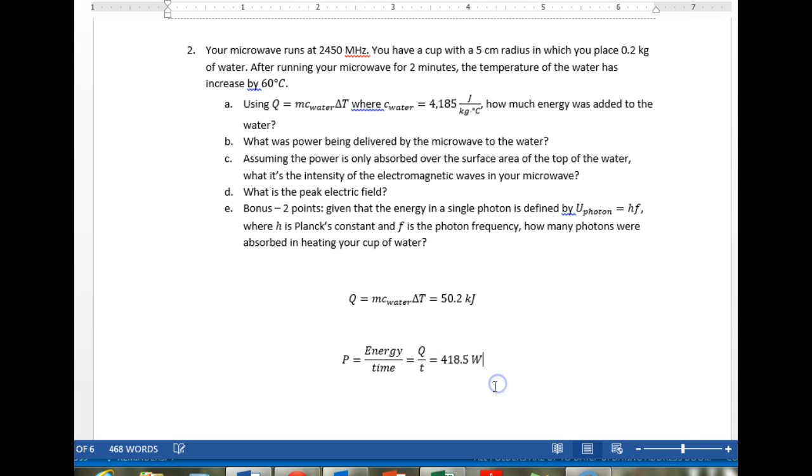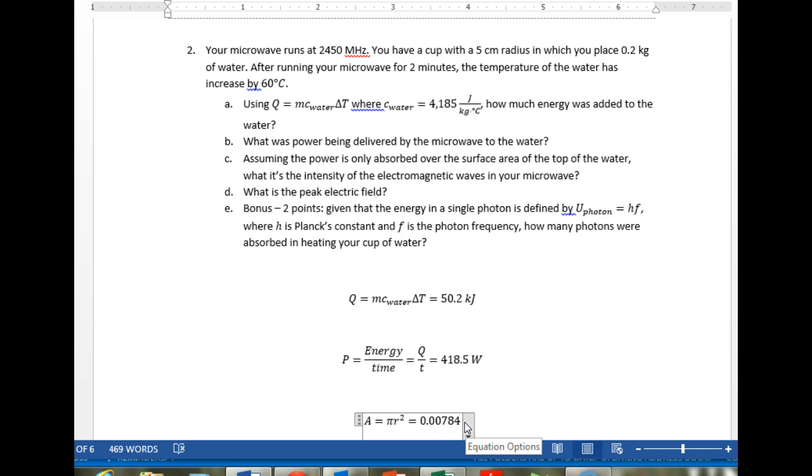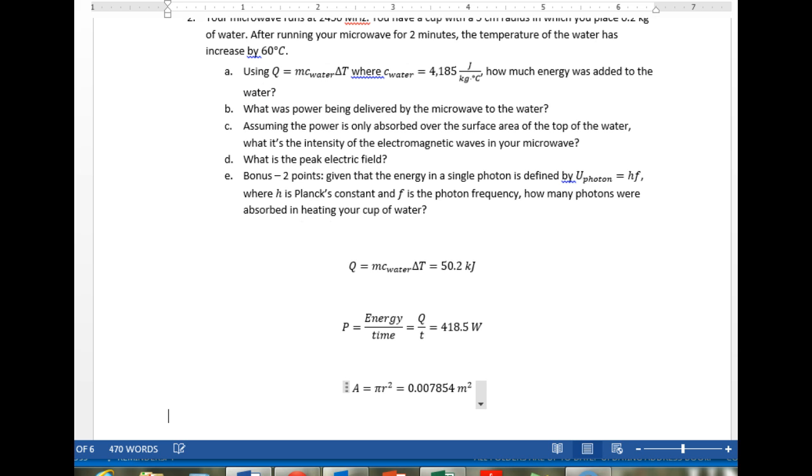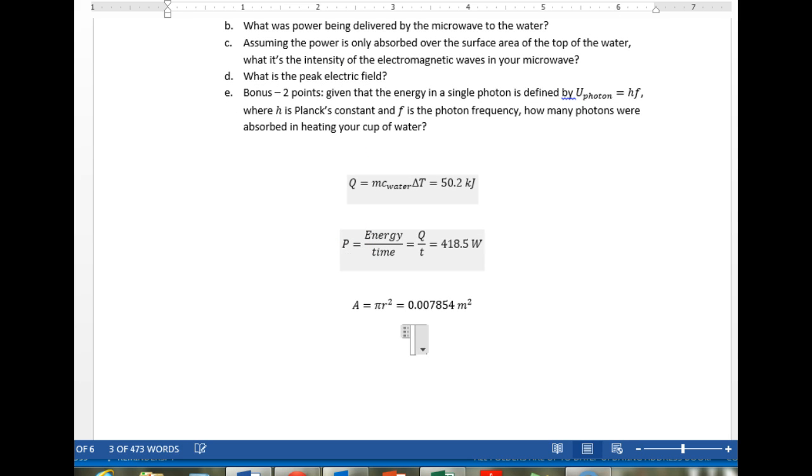The area, which is pi r squared, is 0.00784 meters squared. It's asking for intensity. I skipped a step here. Intensity is power per unit area. So we have the power, we have the area. Now we calculate the intensity.